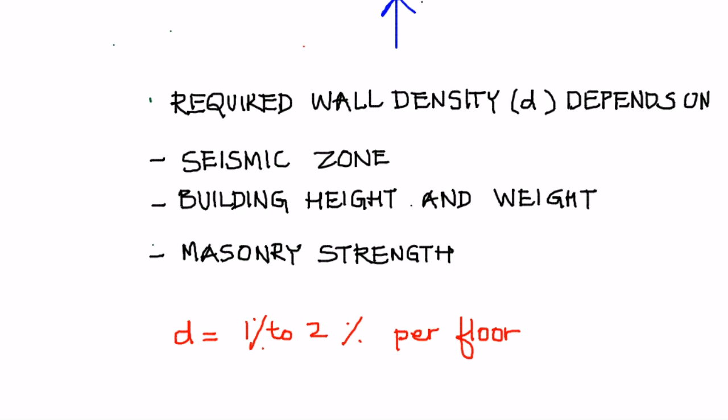Required wall density for a particular building depends on several parameters: the seismic zone where the building is located (such as zones 3, 4, or 5 in India), the building height in number of stories and weight, and the masonry strength — meaning the type of masonry units, whether bricks and their compressive strength, and the type of mortar such as lime mortar, lime cement mortar, or mud mortar. For all these cases, wall density can be determined using simple calculations.